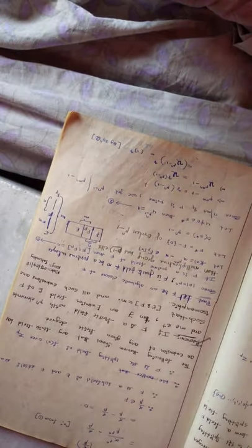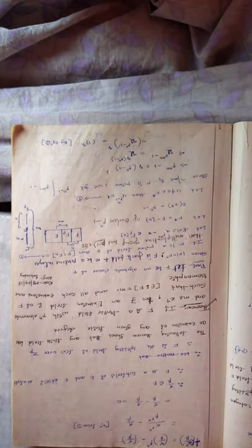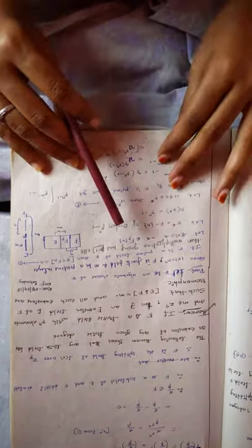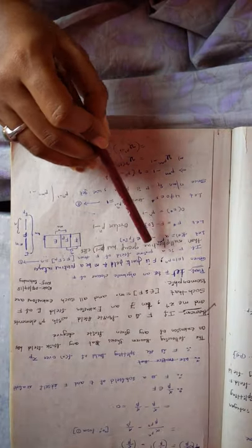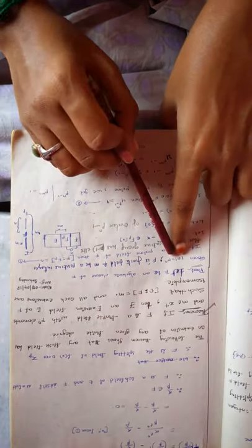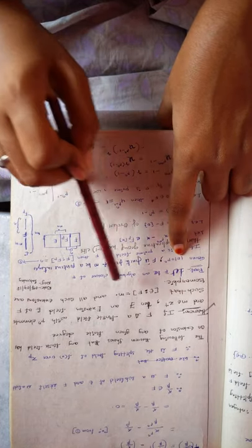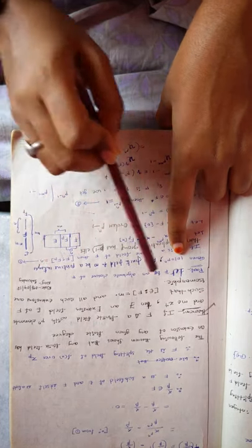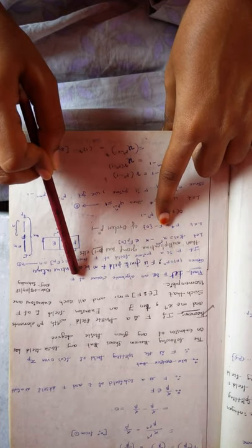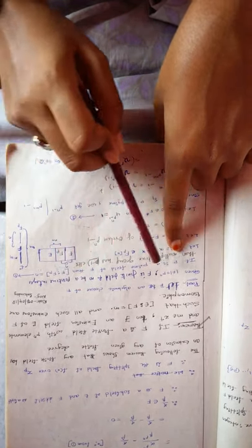And all such extensions are isomorphic. So the given: F is a finite field, that is |F| = p^n, and m is a positive integer. We are considering F-bar as an algebraic closure of F.